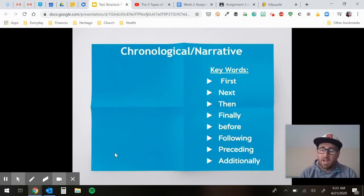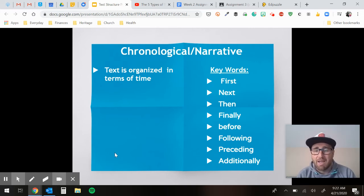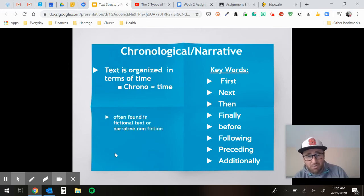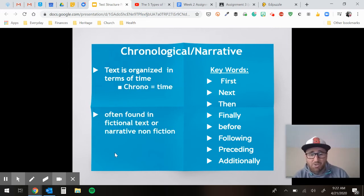Our first one is chronological or narrative. So text is organized in terms of time. First, next, then, finally, before—it's going in order. Chrono equals time, chronological. It's often found in fictional text or narrative nonfiction. Narrative nonfiction is like Frederick Douglass, something that is true, but it was told like a story.